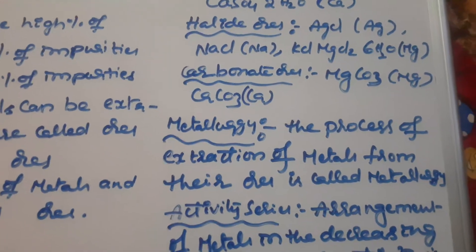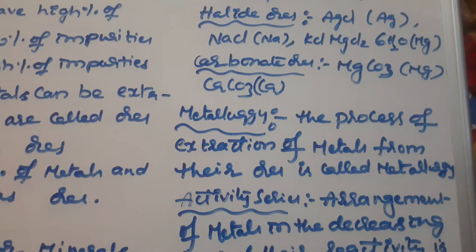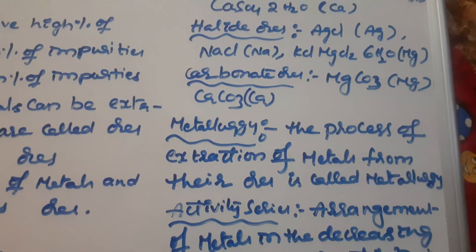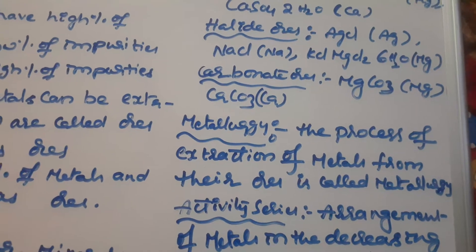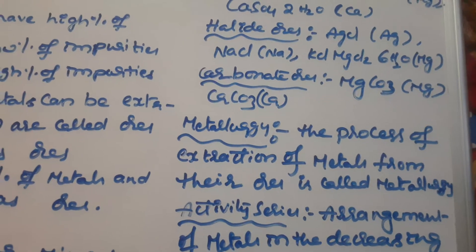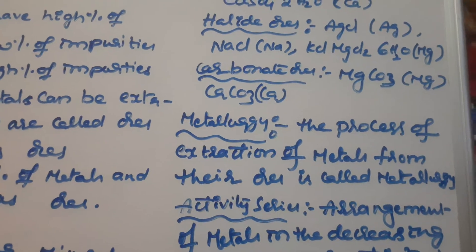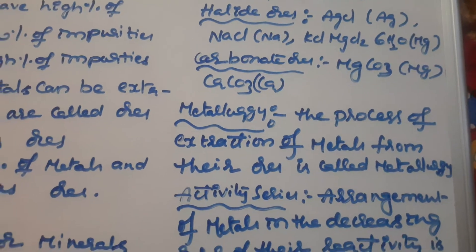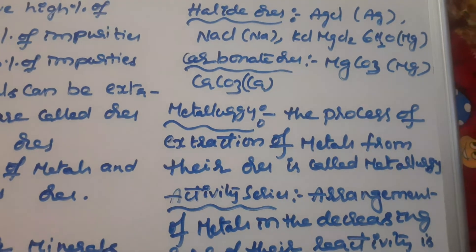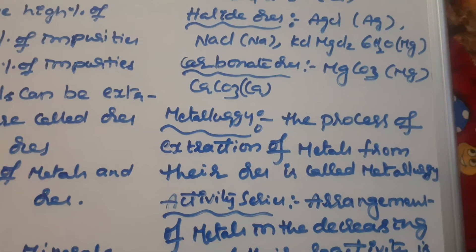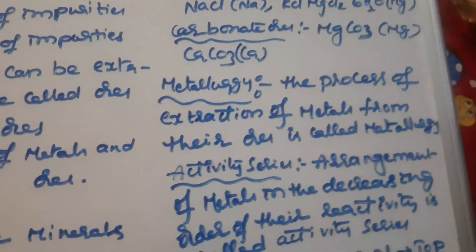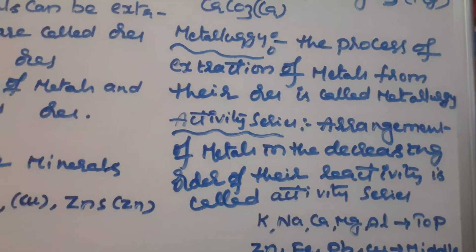After mining these ores from the crust of the earth, they are transported to the nearest metal industry by trucks. This is where metallurgy happens. The process of extraction of metals from their ores is called metallurgy.